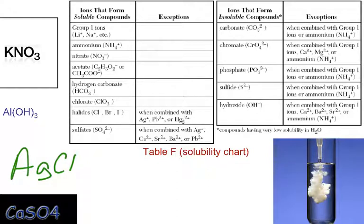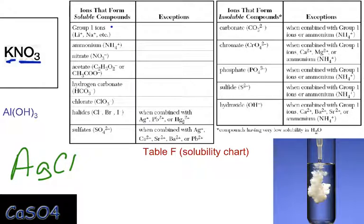Potassium nitrate. You can either check the K or you can check the NO₃, the polyatomic ion — either one will get you the answer. Now, K just so happens to be in group one, and there are no exceptions, so we see right away that this compound is soluble. And you're done — you move on.